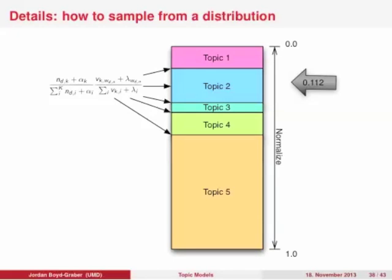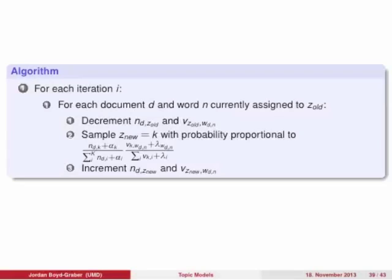To sample from these distributions, we compute all conditional probabilities, which don't sum to 1, so we normalize them. Think of this as a ruler from 0 to 1 — you randomly select a point, and each topic corresponds to a range on the ruler; whichever range you land in is the topic assigned. The full algorithm iterates over all documents and word positions, decrements the counts for that word, samples a new topic assignment proportional to the equation, then increments those counts. That's 90% of the algorithm.